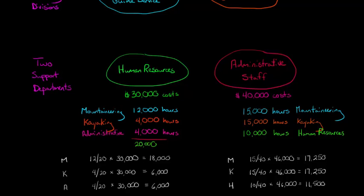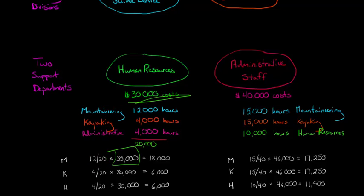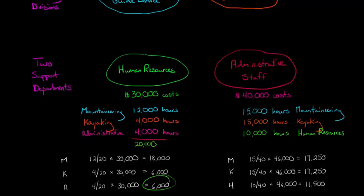For the mountaineering department — abbreviated M — we allocate 12,000 hours out of the total 20,000 provided by HR. So 12/20 times $30,000 gives us $18,000 allocated to mountaineering. The kayaking division gets $6,000 based on 4/20ths of the total cost. And the admin staff gets 4/20ths: 4,000 out of 20,000 hours times $30,000 equals $6,000. That $6,000 comes over to admin staff, bringing them to $46,000.